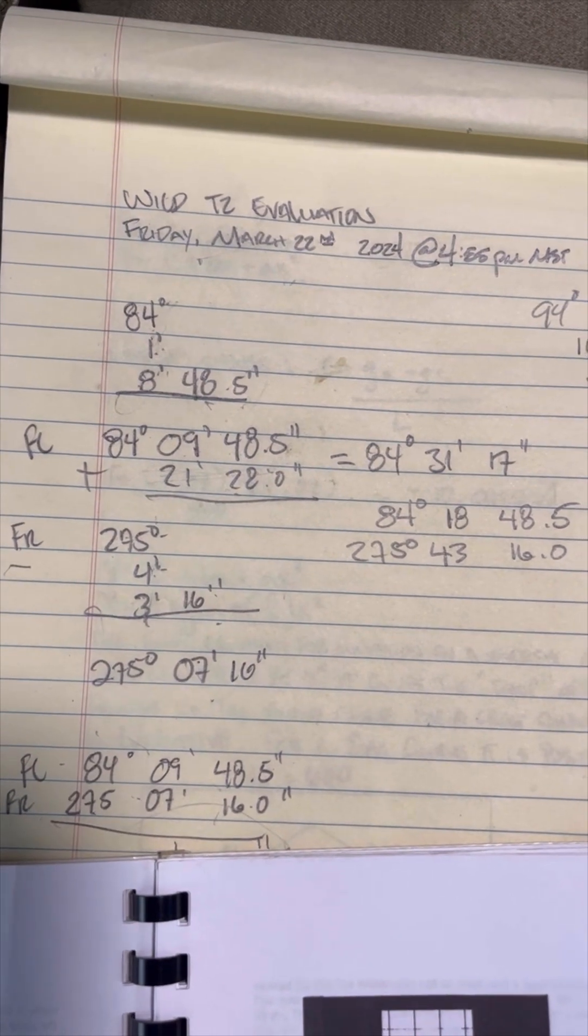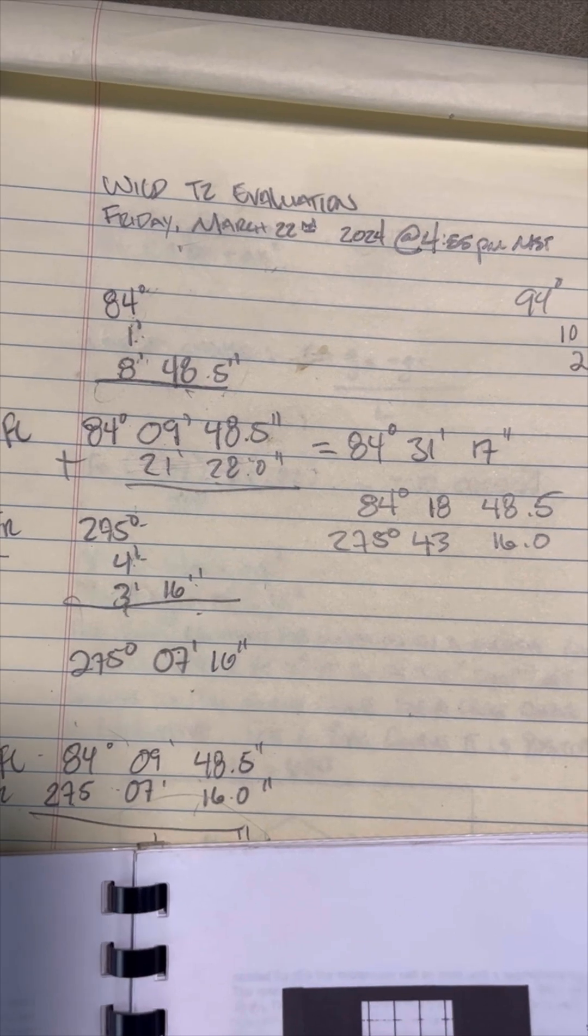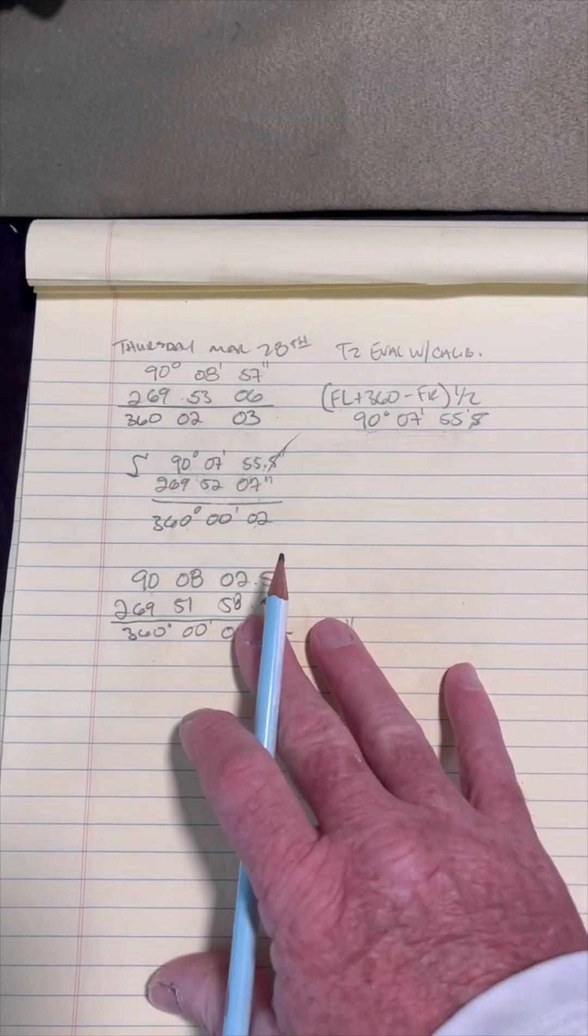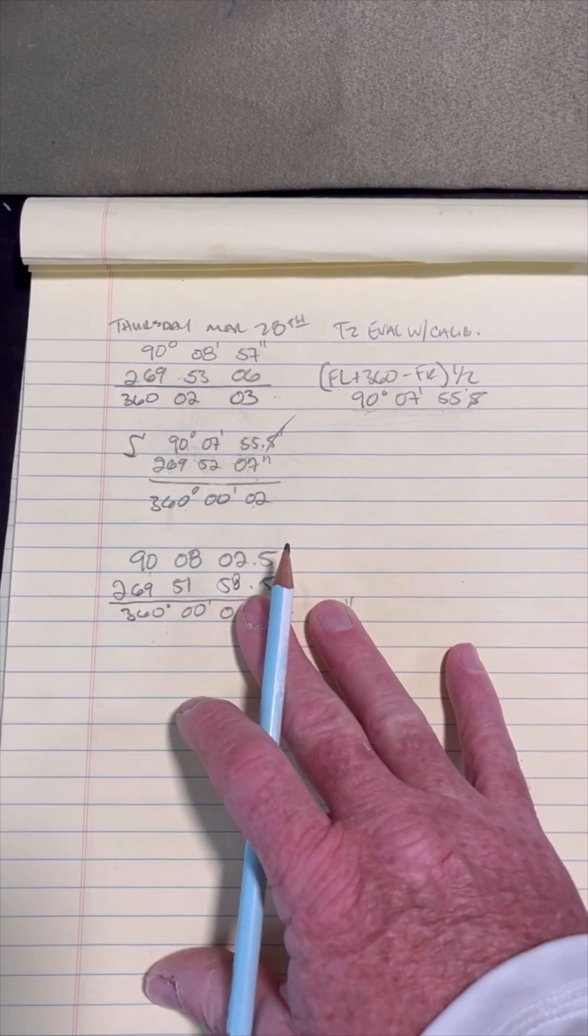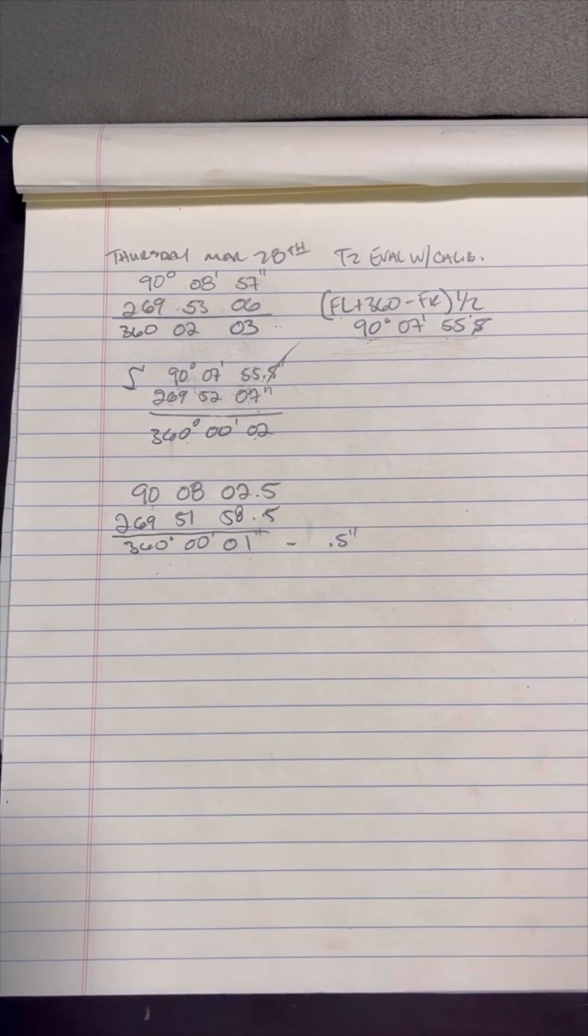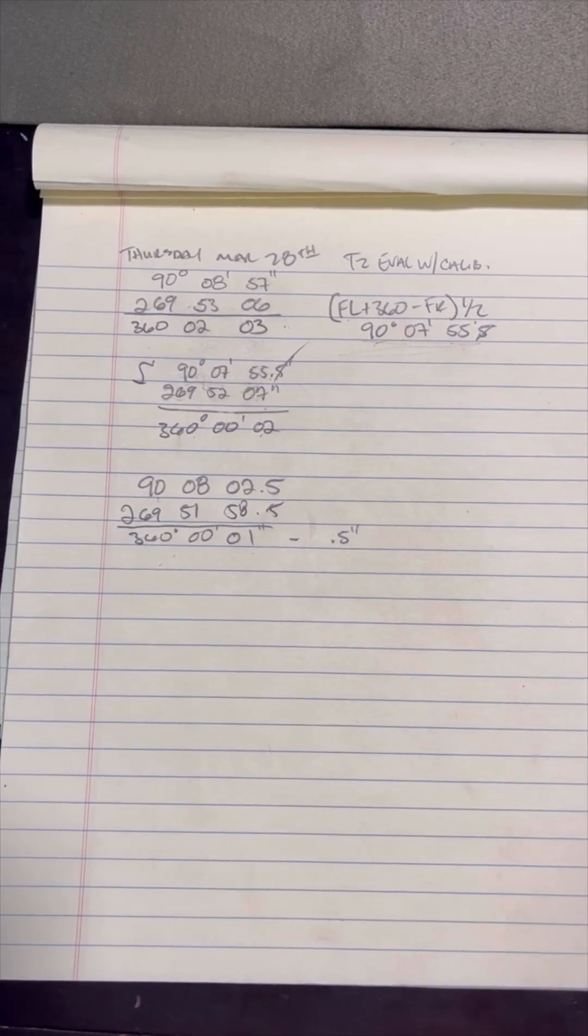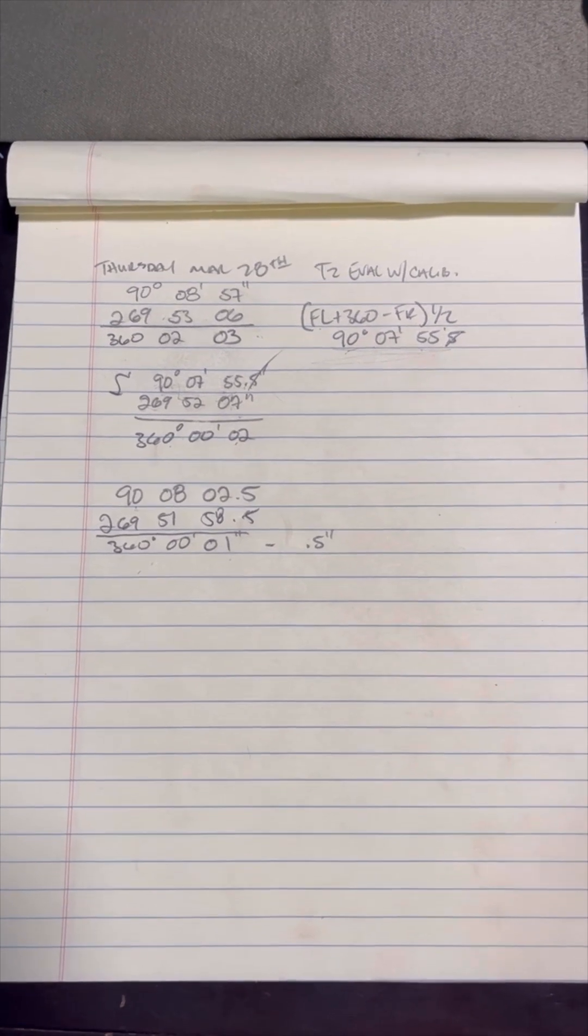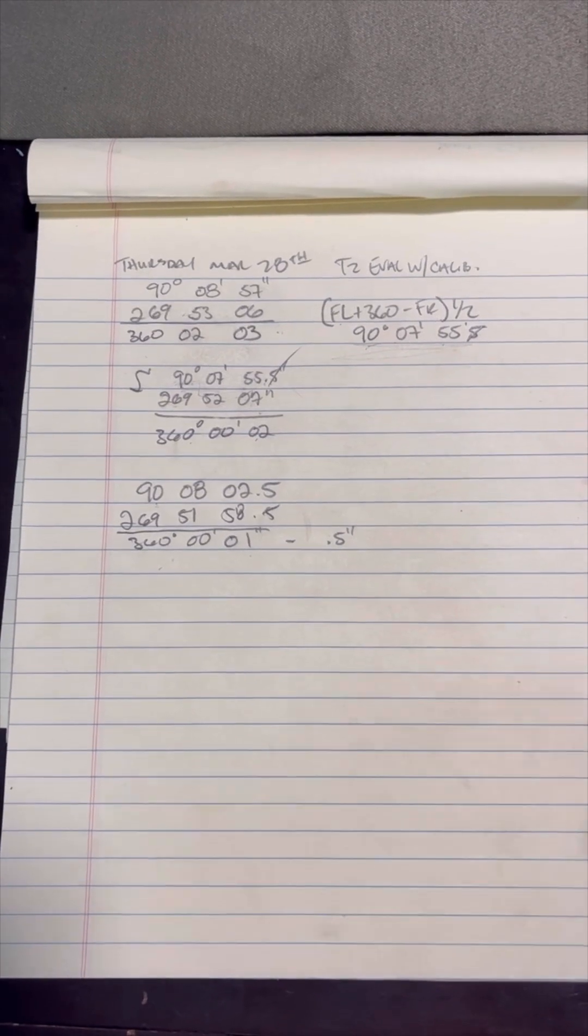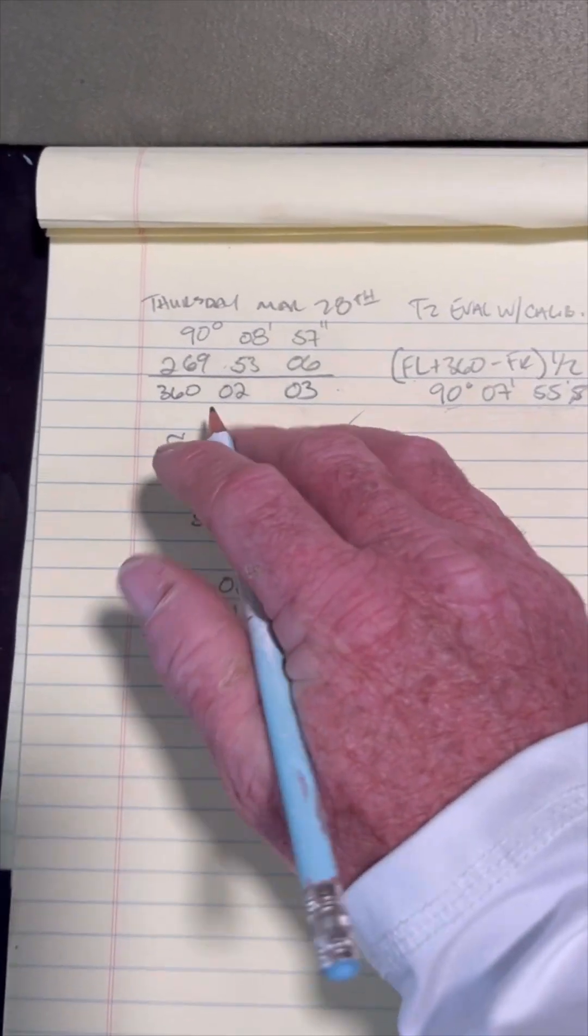Once I understood where the blunder occurred and that it was human, it was on me, I wanted to reevaluate the instrument. And so this time I found a really well-defined target. I found the corner and top of a block wall roughly 60 meters away. Got the instrument plumb and I made my face left reading.